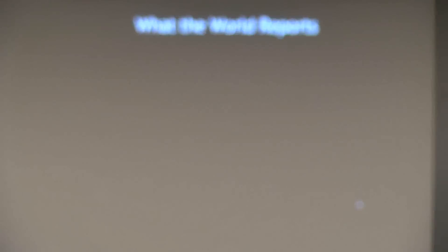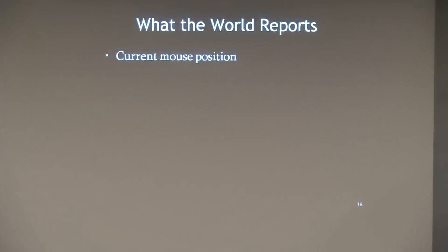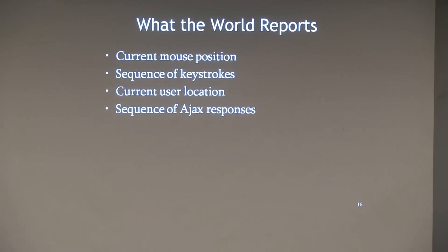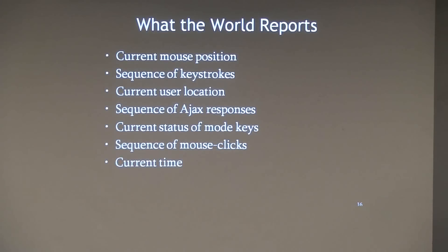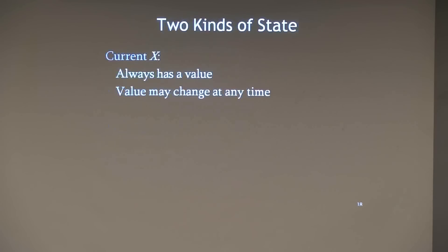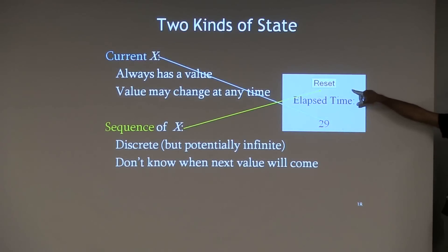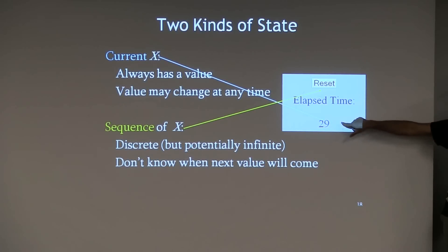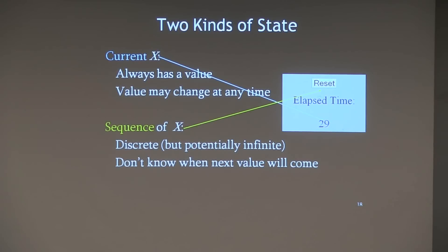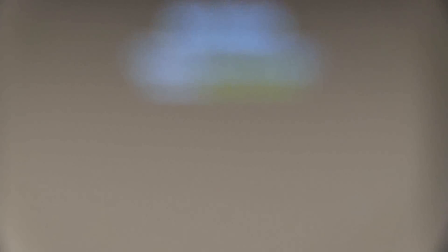What kind of information does the world report to us? Sometimes it's continuous — where the mouse currently is, current location — something that always has a value but may be changing. And then there are discrete sequences — keystrokes, Ajax responses. There's something that always has a value you don't know when it'll change, and then sequences where you don't know when the next value is coming — potentially infinite. That's a classic stream.